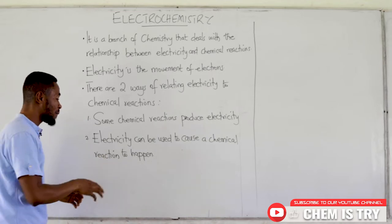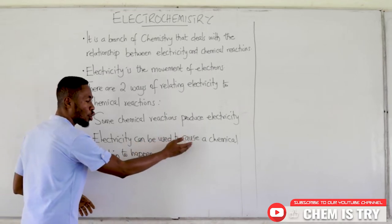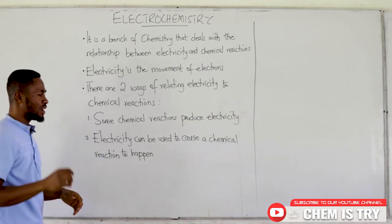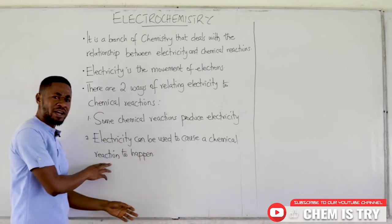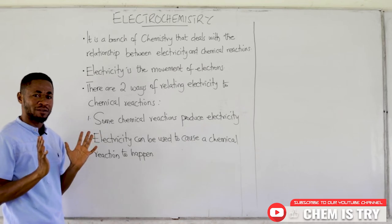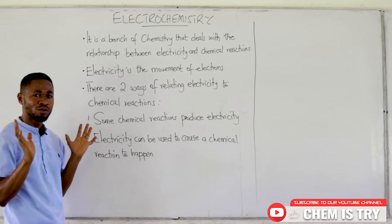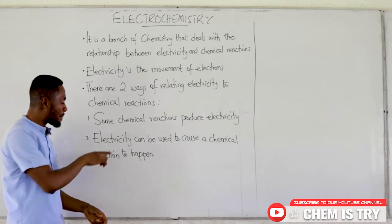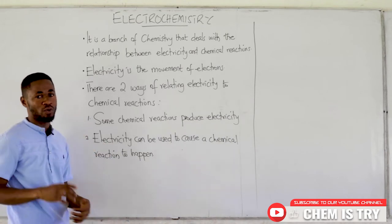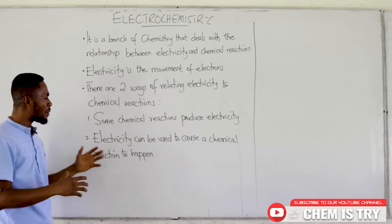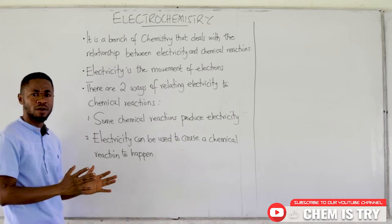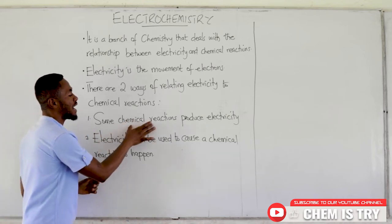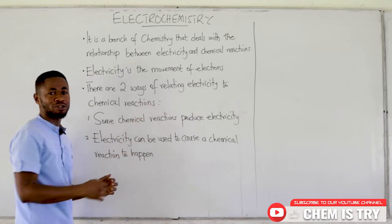In the second way, electricity can be used to cause a chemical reaction to happen. This means the chemical reaction involved didn't want to happen on its own, but we wanted it to happen, so we did that by passing electricity through it. Now we're going to talk about each of them. First, let's talk about how chemical reactions produce electricity.